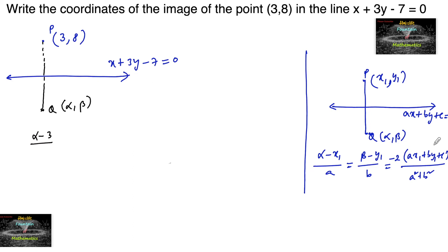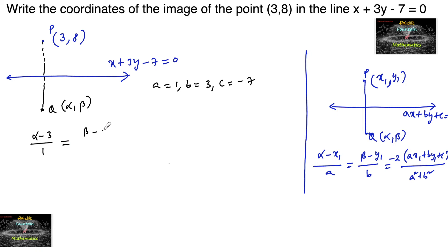Comparing with ax plus by plus c equals to 0, we get a equals 1, b equals 3, c equals minus 7. So: alpha minus 3 upon 1 is equal to beta minus 8 upon 3, is equal to minus 2 times of (ax1 plus by1 plus c), where (x1, y1) is (3, 8).